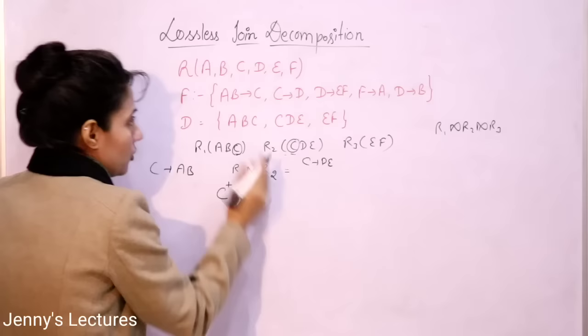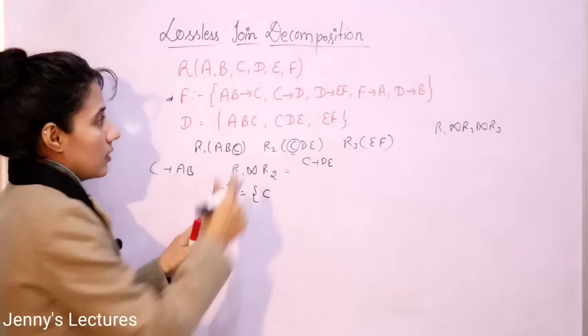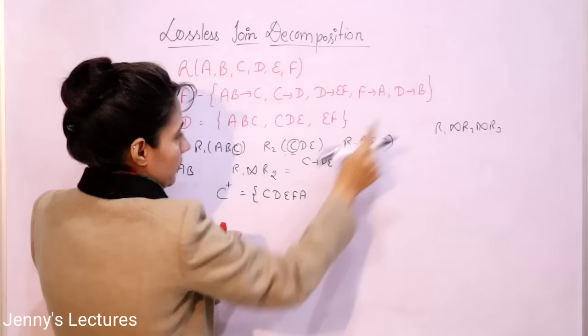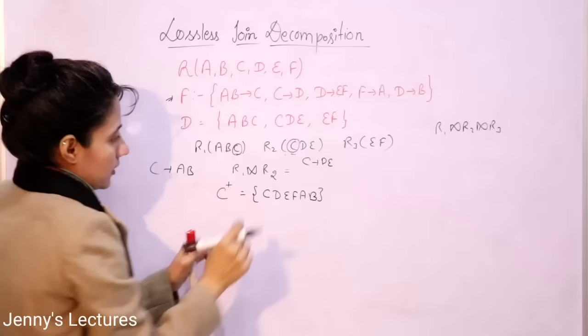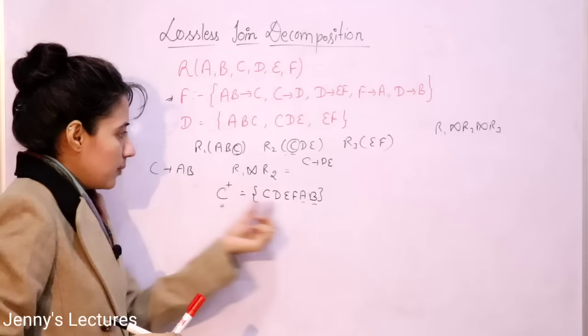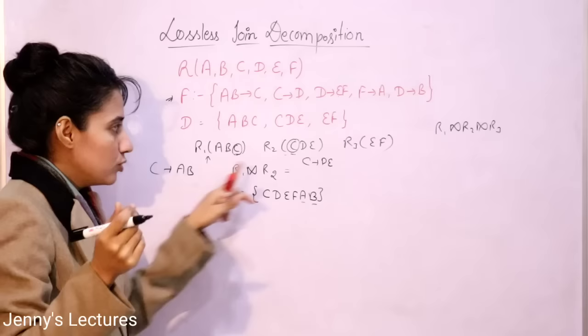C closure will definitely contain C. Using C I can derive D. Using D I can derive E and F. Using F I can derive A. Using D I can derive B. Now check: does C closure contain both A and B? Yes — C can drive both A and B, so C is a candidate key for R1.